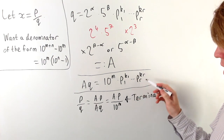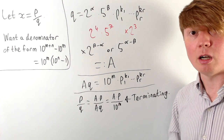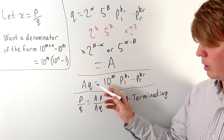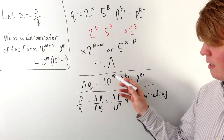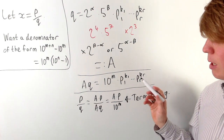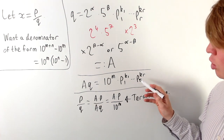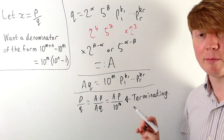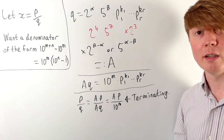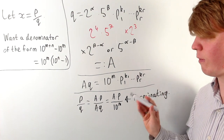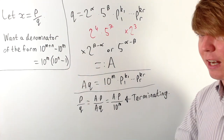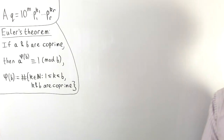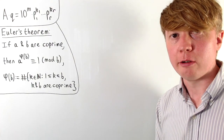Now we've got our denominator in the form 10 to the m multiplied by some prime factors. Considering the case where there are some extra prime factors that aren't 2s and 5s, we'll see how we can multiply this by something to get 10 to the n minus 1. And this is where we're going to use Euler's theorem.